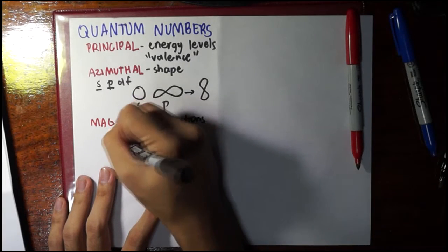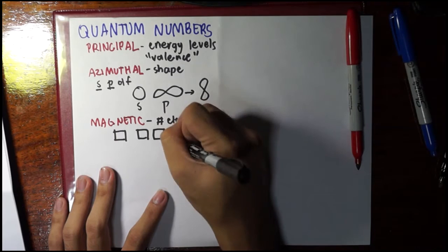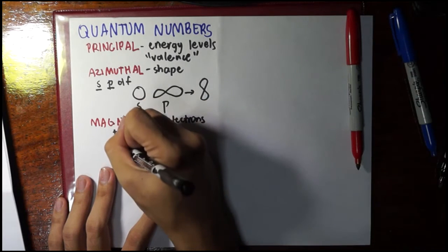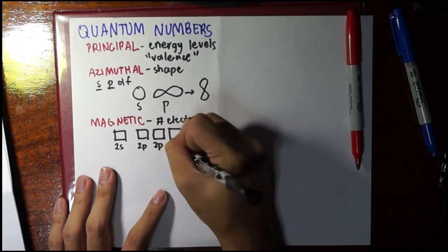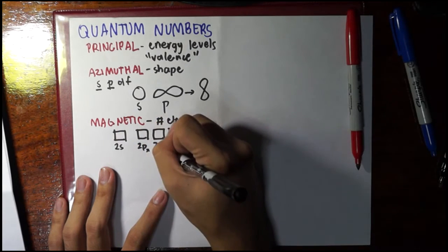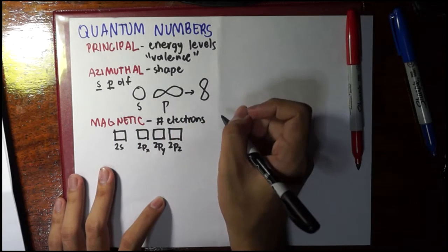So here we should recall Hund's rule, which says that, for example, in this valence shell you go singly first among the orbital or among the slots here per azimuthal quantum number, then that's the time where you fill them.